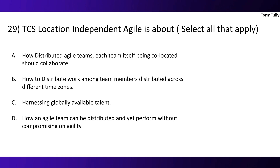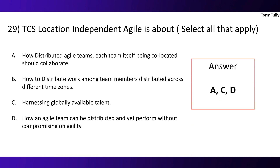Question 29. TCS location independent Agile is about. Option A: How a distributed Agile team, with each team itself being co-located, should collaborate. Option B: How to distribute work among team members distributed across different time zones. Option C: Harnessing globally available talent. Option D: How an Agile team can be distributed and yet perform without compromising on agility. The correct options are A, C, and D.